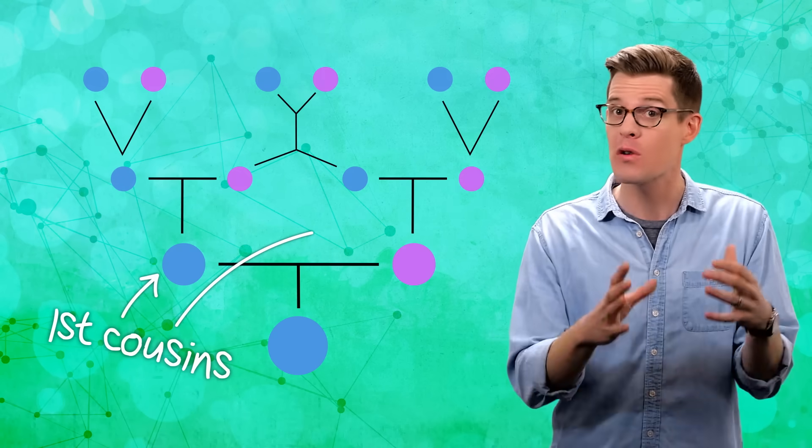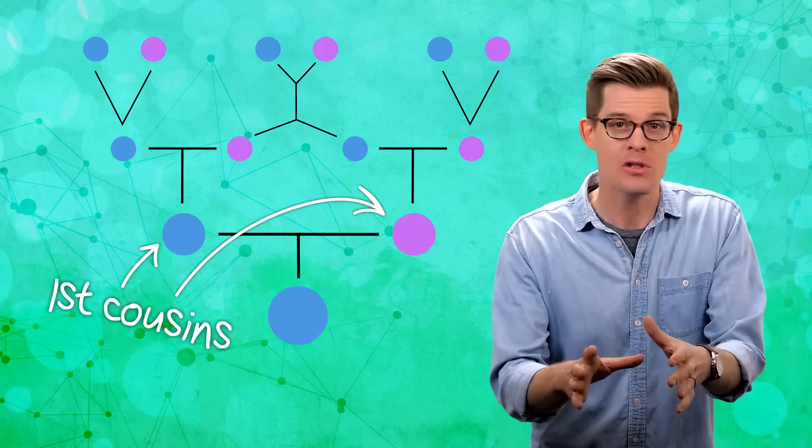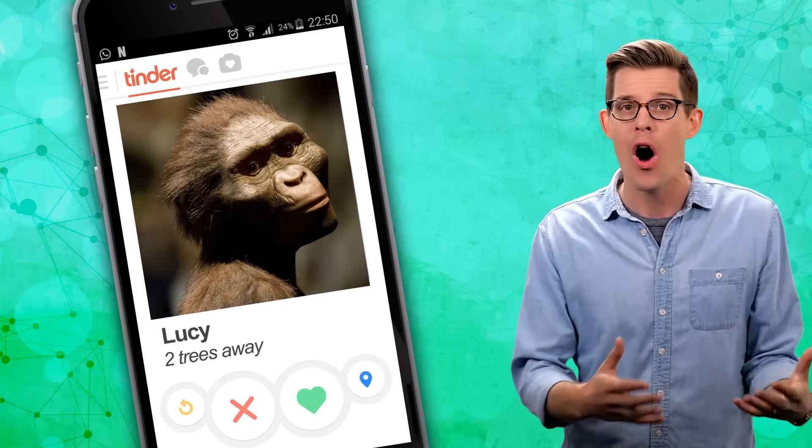We're not talking banjo-playing King of Spain's Cersei Jaime inbreeding, but every family tree inevitably grows forks. Before Tinder, choices for mates were often limited to as far as you could walk. Even people like Charles Darwin and Albert Einstein married their first cousins.